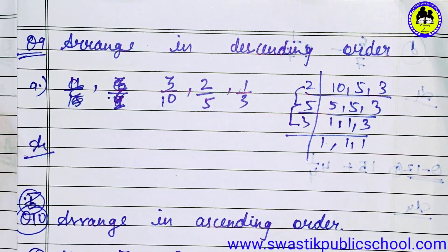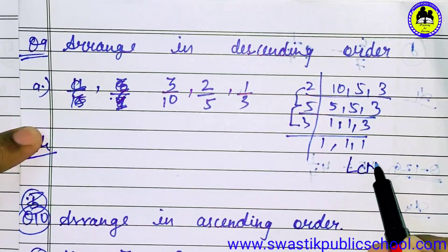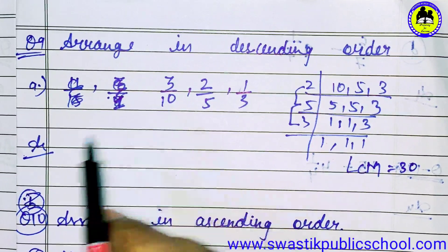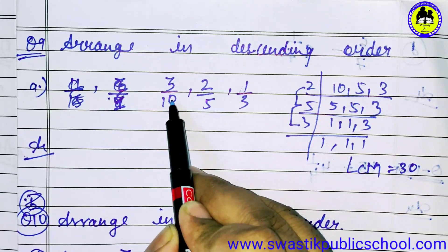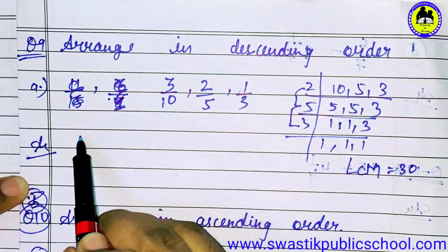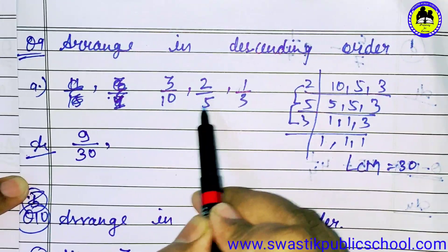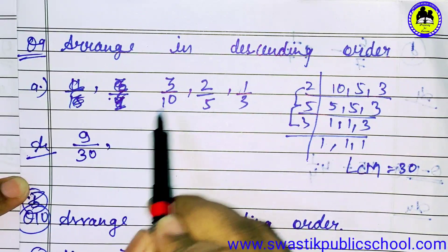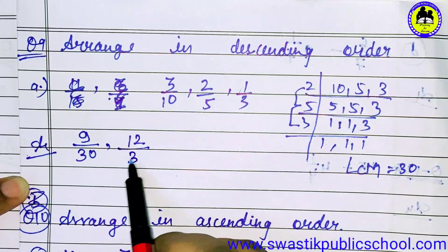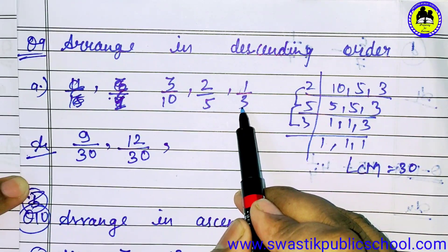We will convert all denominators to 30. We find LCM of 10, 5, and 3, which is 30. Okay. So we will multiply: for the fraction with denominator 3, we multiply by 10 — that will give 9 upon 30. For the fraction with denominator 5, we multiply by 6 — 2 × 6 = 12 and 5 × 6 = 30, giving 12 upon 30.